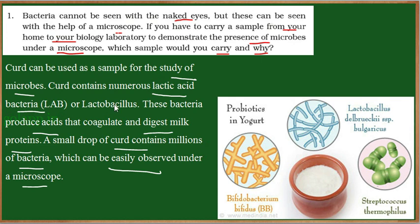In the curd, there are many bacteria — the bacillus-shaped bacteria called lactic acid bacteria or lactobacillus. These bacteria, initially present in the milk, convert the milk into curd by producing acid that coagulates and digests the milk protein. If you take a small sample of curd and stain it, you can see hundreds and thousands of bacteria. So curd is the easy, readily available material to carry from home to check for the presence of microbes.